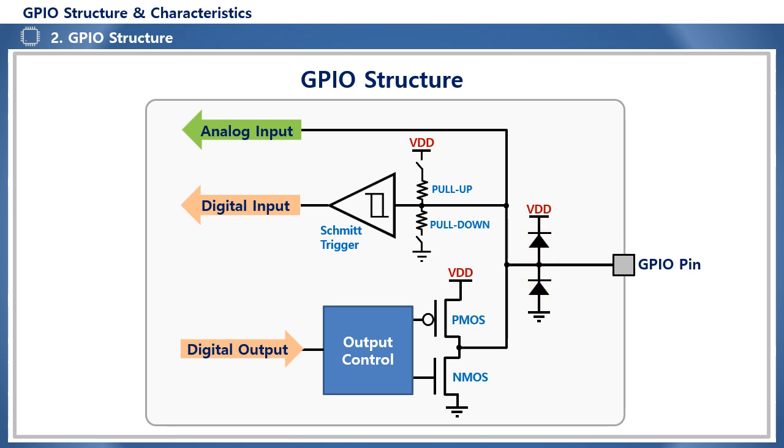In this way, GPIO must be able to perform two roles, input and output, in one port, and the input is structured to receive and process not only digital but also analog signals. And the output applies a push-pull driver to stably supply logic high and low to the load.